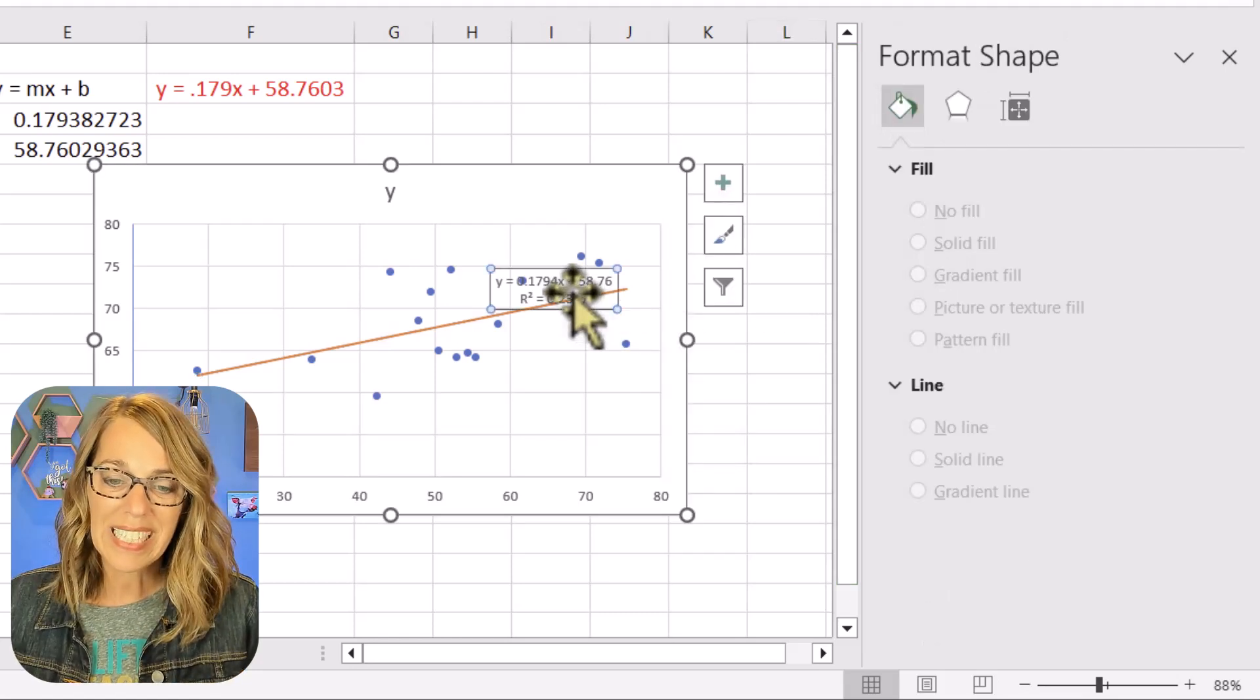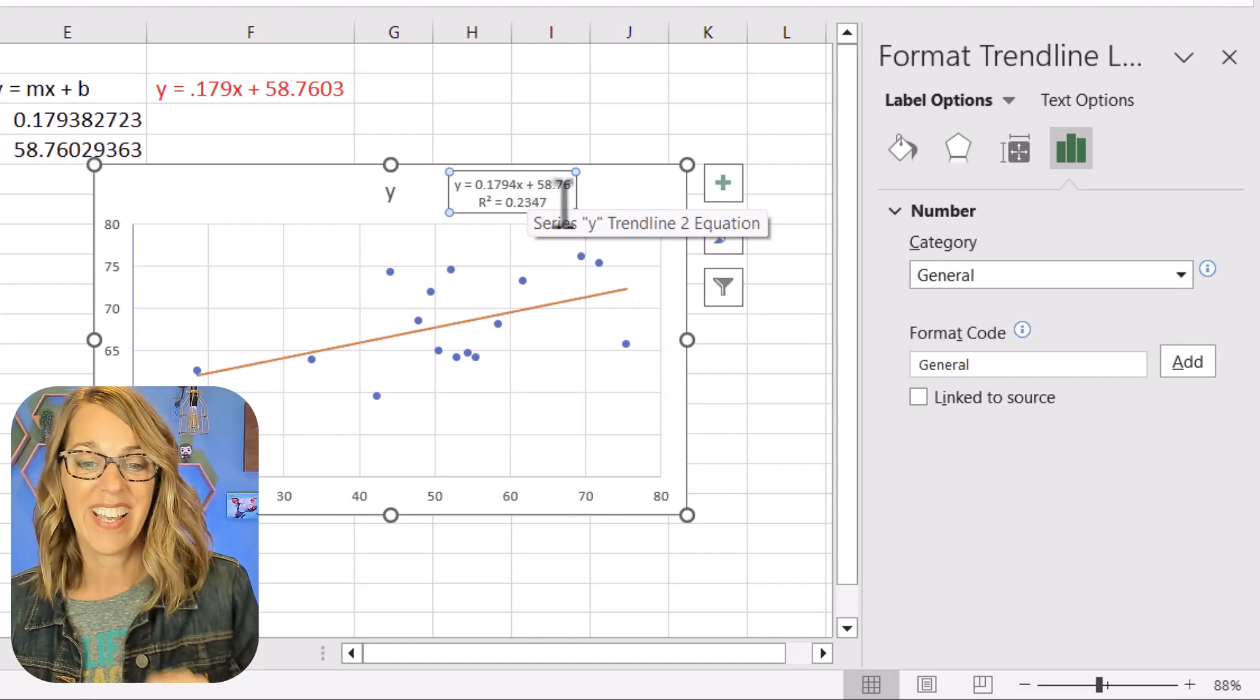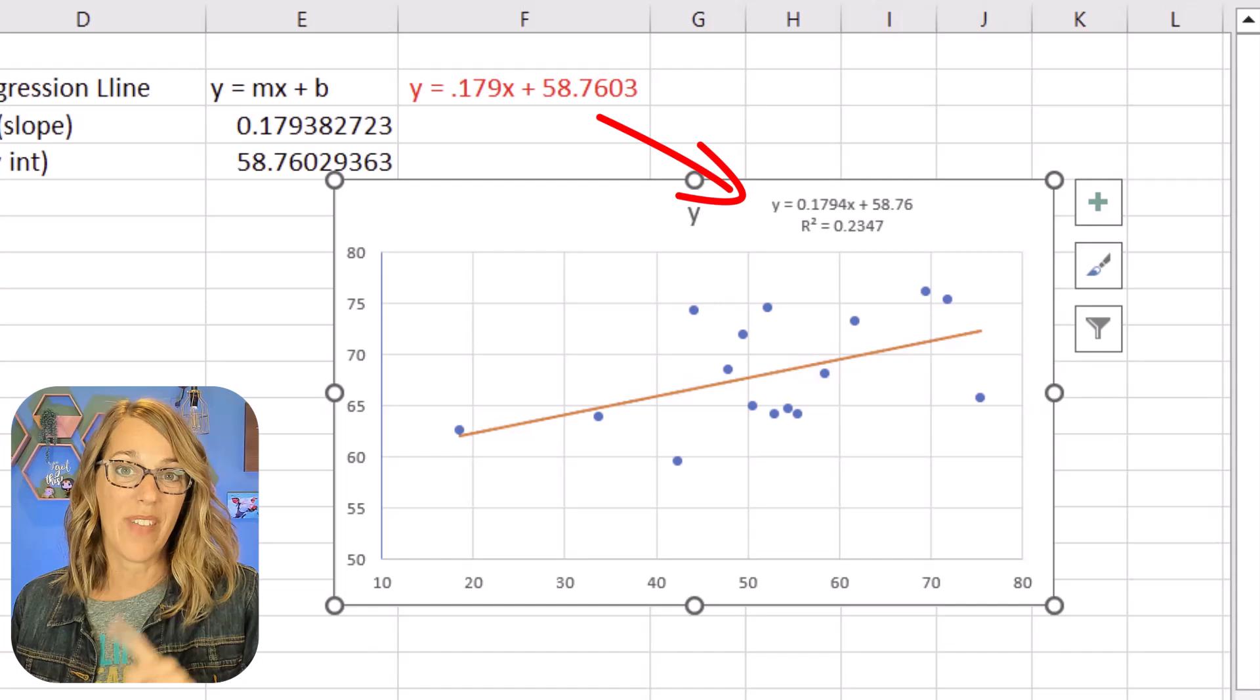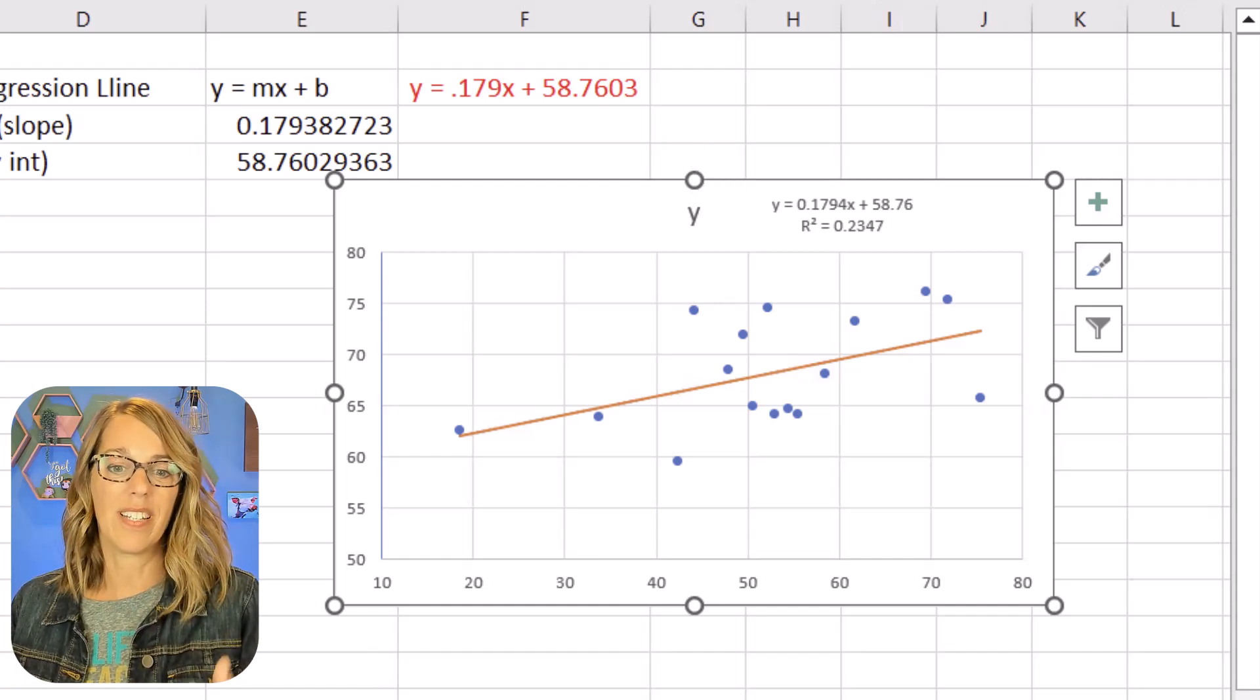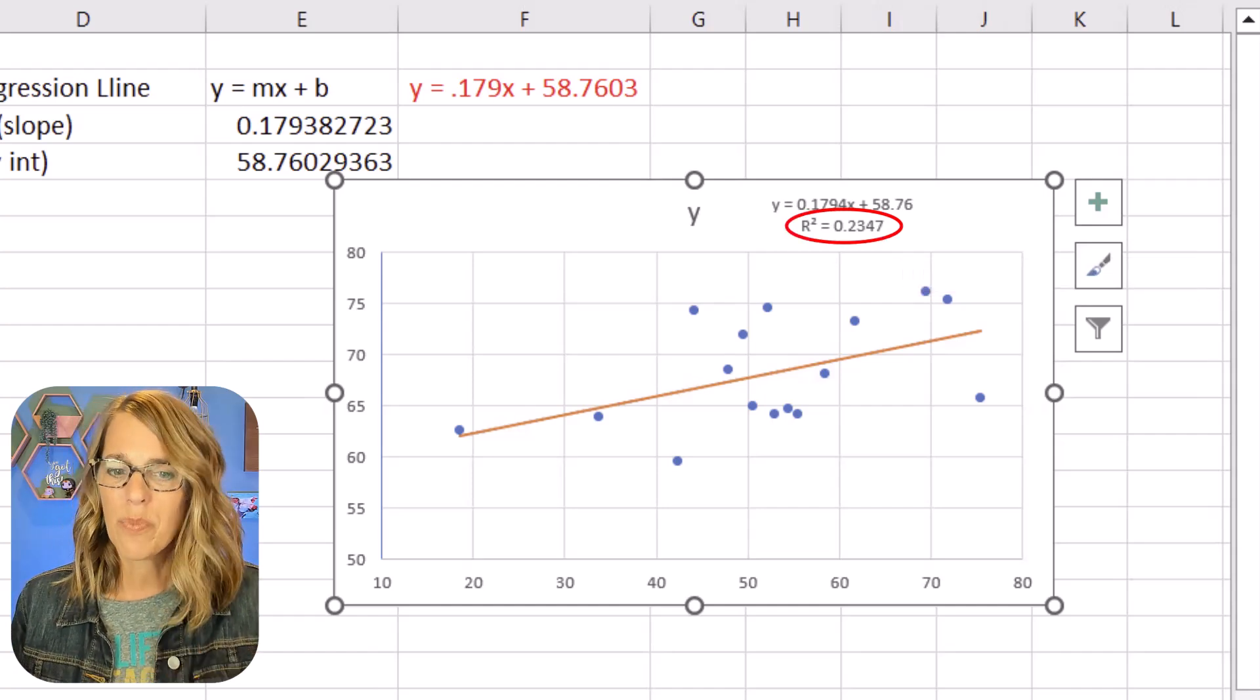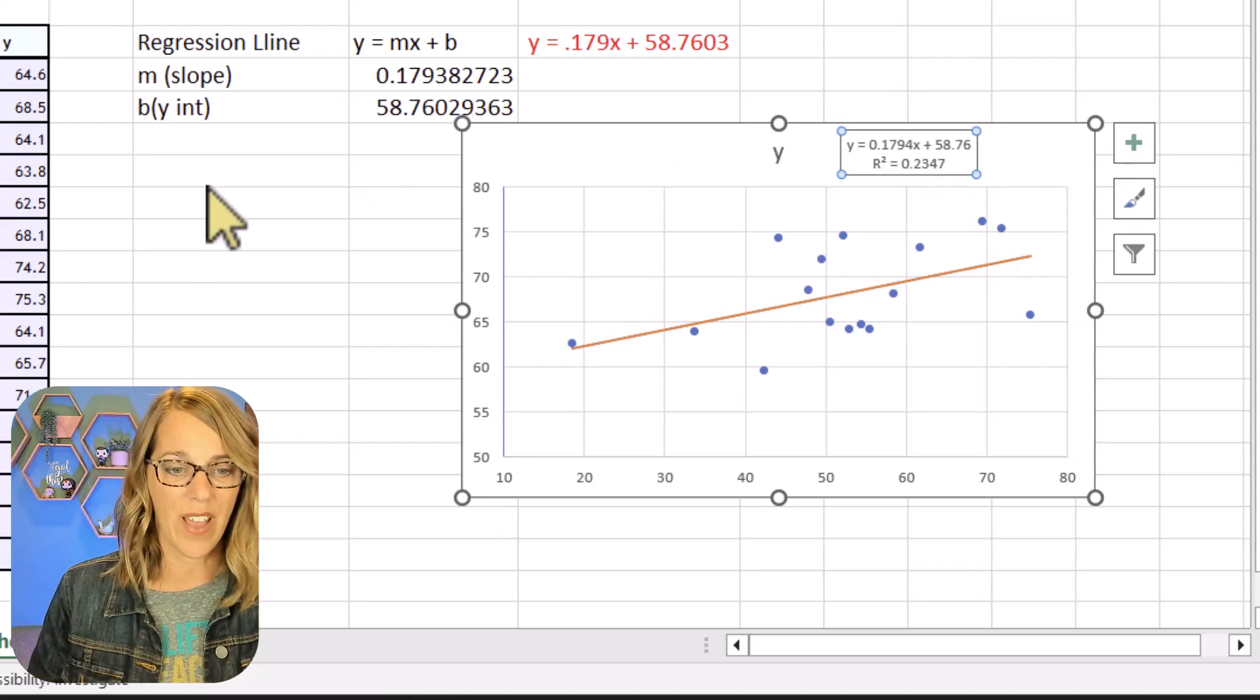Now I've got if I click on these labels I've got the equation of my line. So from my labels you can see that this matches the equation of the line that we found at the very beginning. Now it doesn't give me the correlation coefficient. Instead it gives me the r squared value, the correlation coefficient squared, which I really wanted that to be close to one and it's not. Let's find the r value.